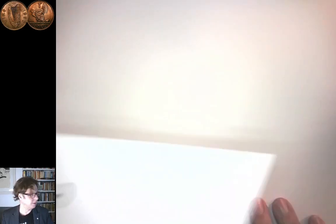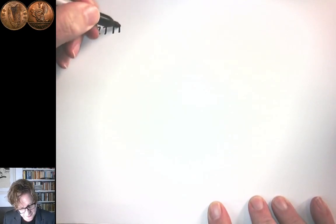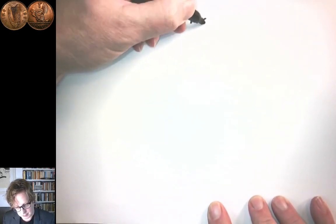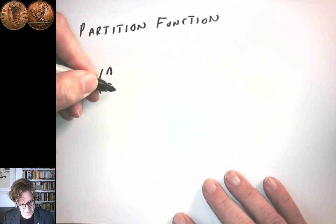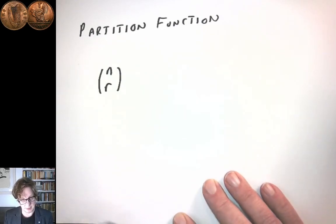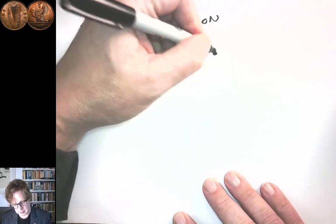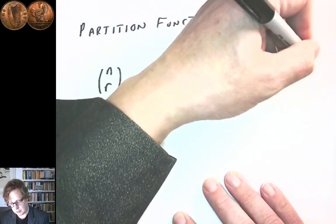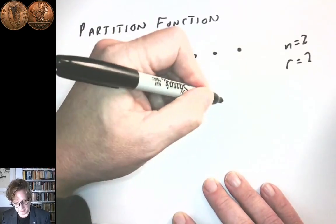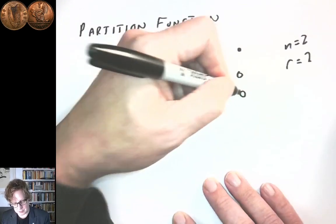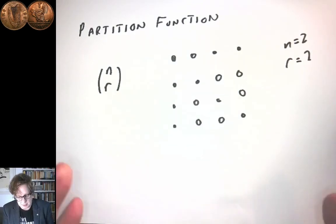The second example is an application of the partition function. The partition function is about ways that you can divide something up into subgroups. The binomial coefficient is an example of a partition function — n choose r is the number of ways of selecting r out of n objects. So if you have your n objects, this is a way of selecting two elements and leaving the other elements in the set, dividing the original set up into two groups.